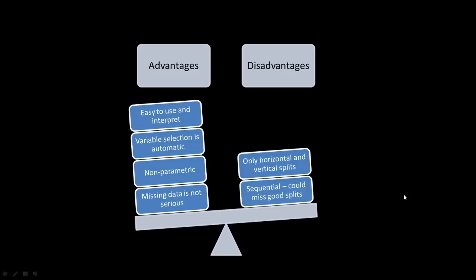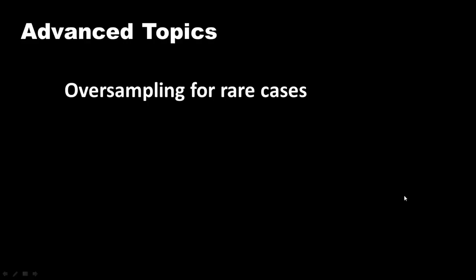There are two more advanced topics that I'd like to mention here, and maybe later in the course we'll talk about them in more detail. The first is relevant when you're talking about people who accept loans, evaluating which tax returns are fraudulent, or who are the people going to buy luxury cars. In all of these cases, the success cases are going to be very rare in your data.